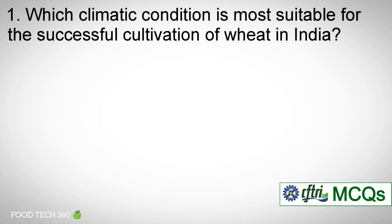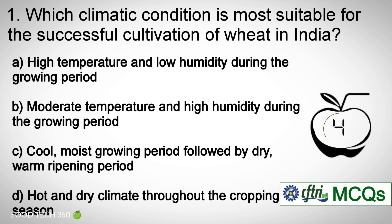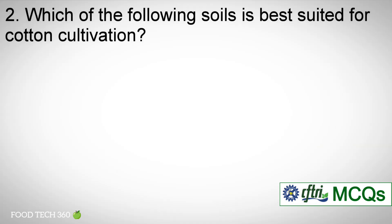Question number one: Which climatic condition is most suitable for the successful cultivation of wheat in India? Options: a) High temperature and low humidity during the growing period. b) Moderate temperature and high humidity during the growing period. c) Cool moist growing period followed by dry warm ripening period. d) Hot and dry climate throughout the cropping season. Correct answer: c) Cool moist growing period followed by dry warm ripening period.